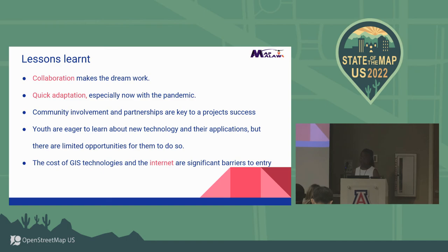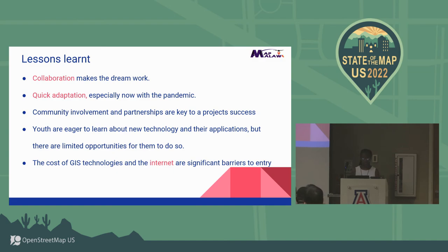The lessons we learned: community involvement makes the dream work — whether within the area we're working in or outside, we learn, we grow, and the accuracy of information improves by involving the community. On quicker adaptation: everything in our proposal was going to be in person, but COVID happened and we weren't able to. For youth who want a project but think they have certain barriers — you adapt and it really does work. The cost of GIS technologies and internet is a significant barrier to entry, but once you figure that out, things work out.